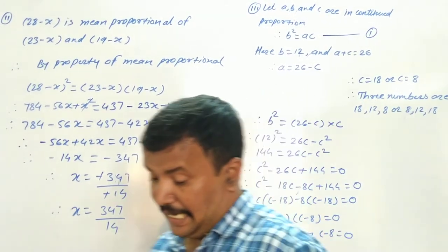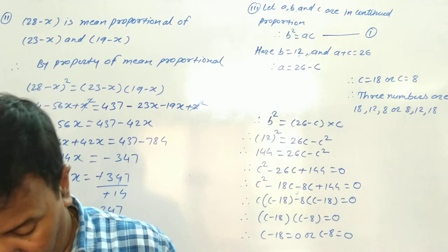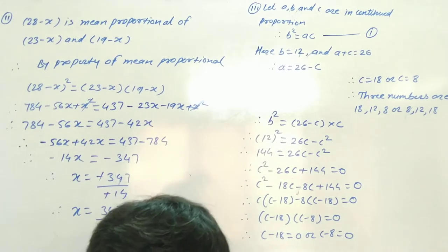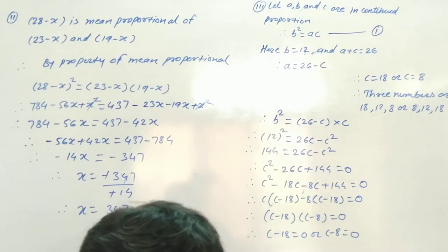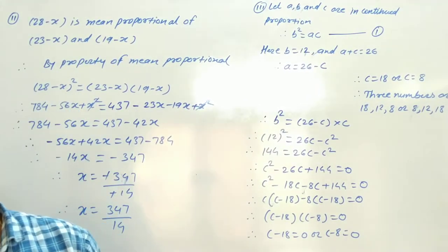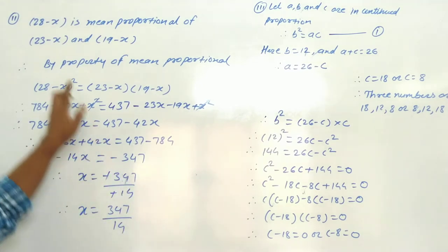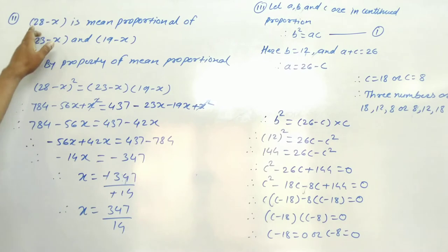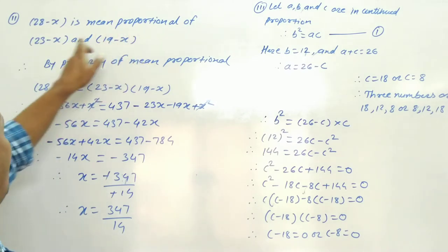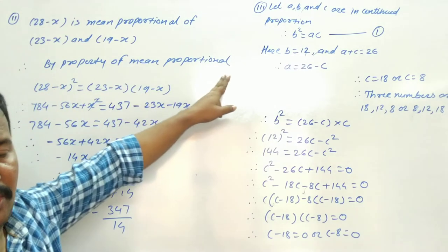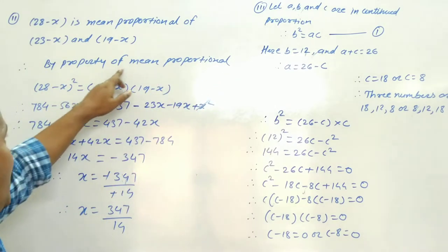Second question: if 28 minus x is the mean proportional of 23 minus x and 19 minus x, then find x by the property of mean proportional.